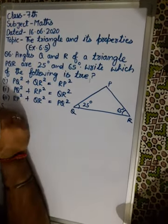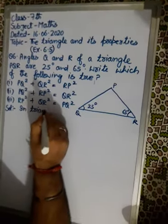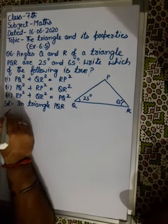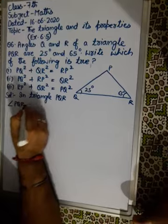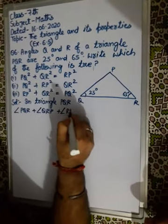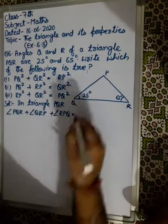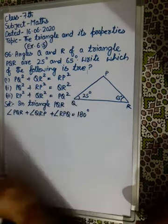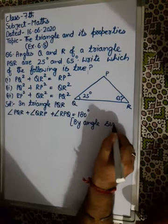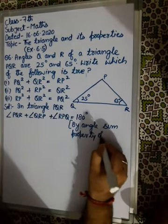Solution: In triangle PQR, angle PQR plus angle QRP plus angle RPQ equals 180 degrees. This is by the angle sum property of triangles.